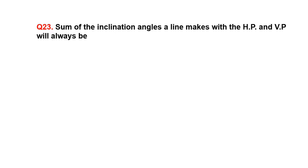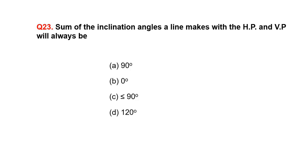The sum of the inclination angles a line makes with HP and VP will always be: A. 90 degree, B. 0 degree, C. Less than or equal to 90 degree, D. 120 degree.